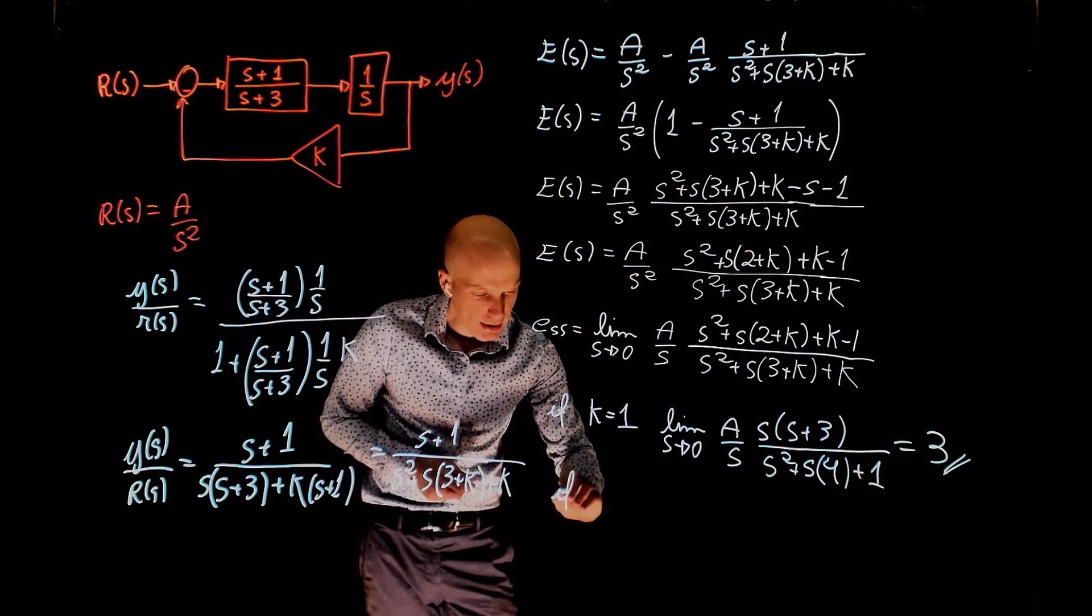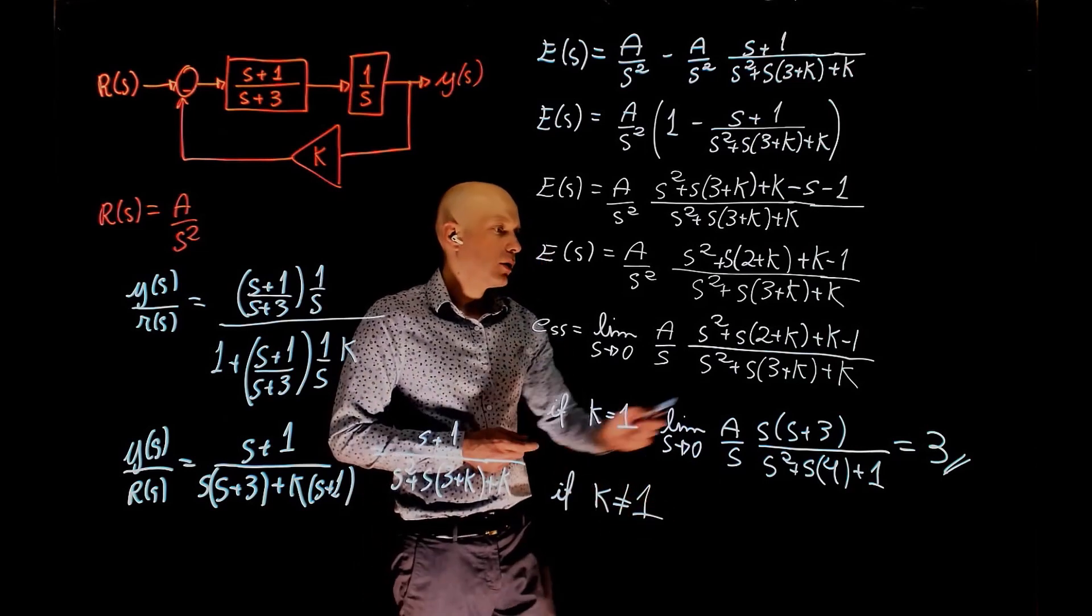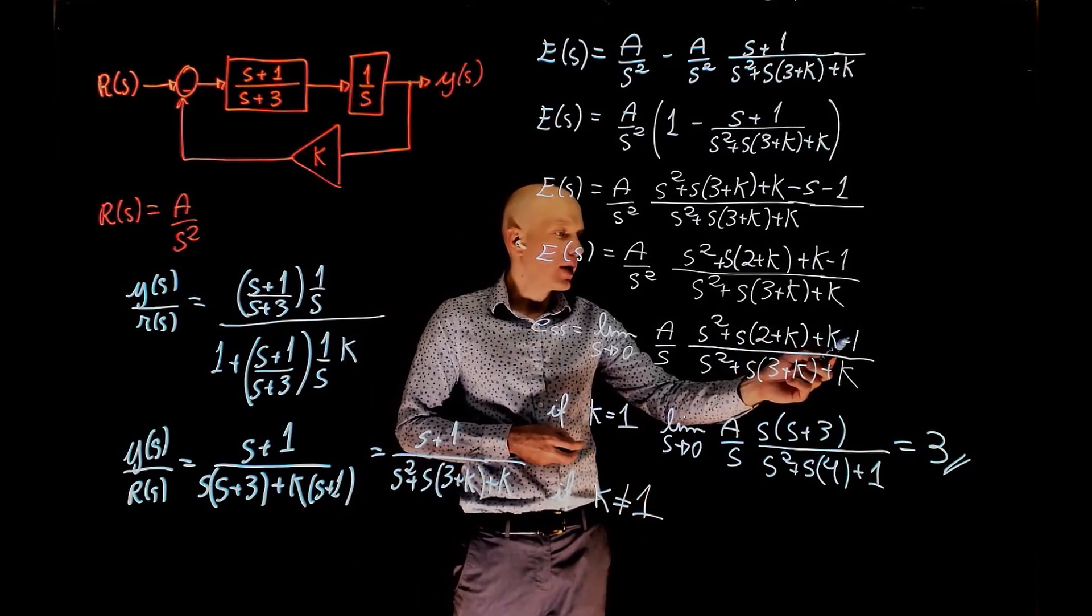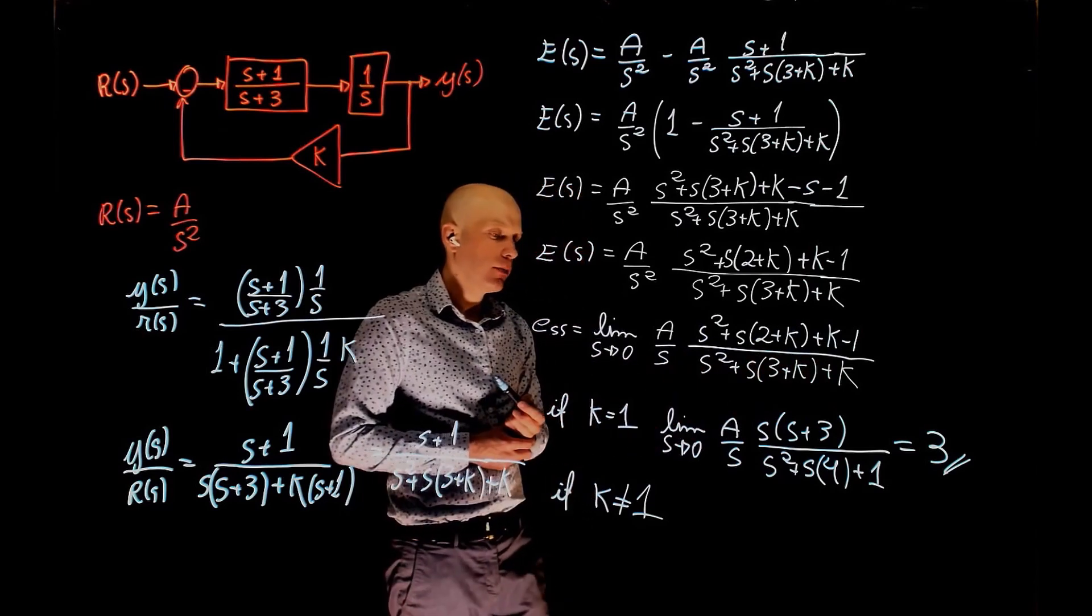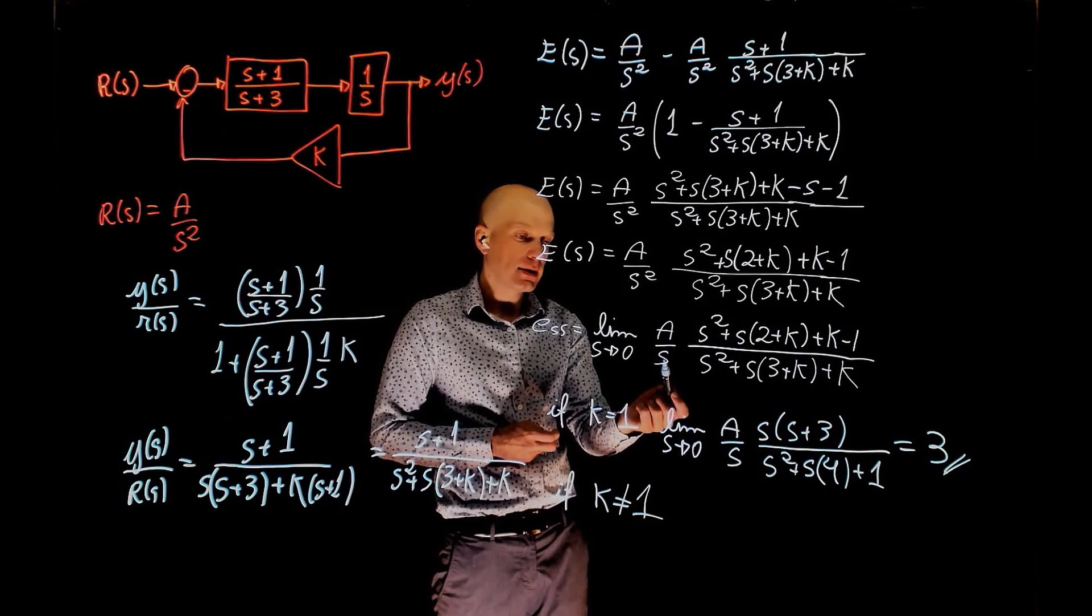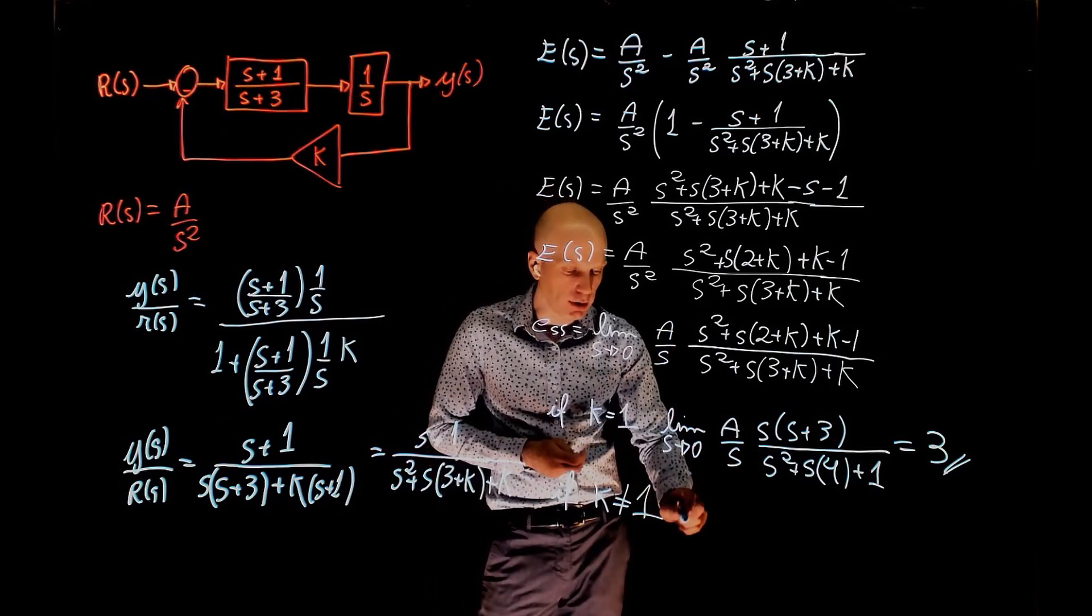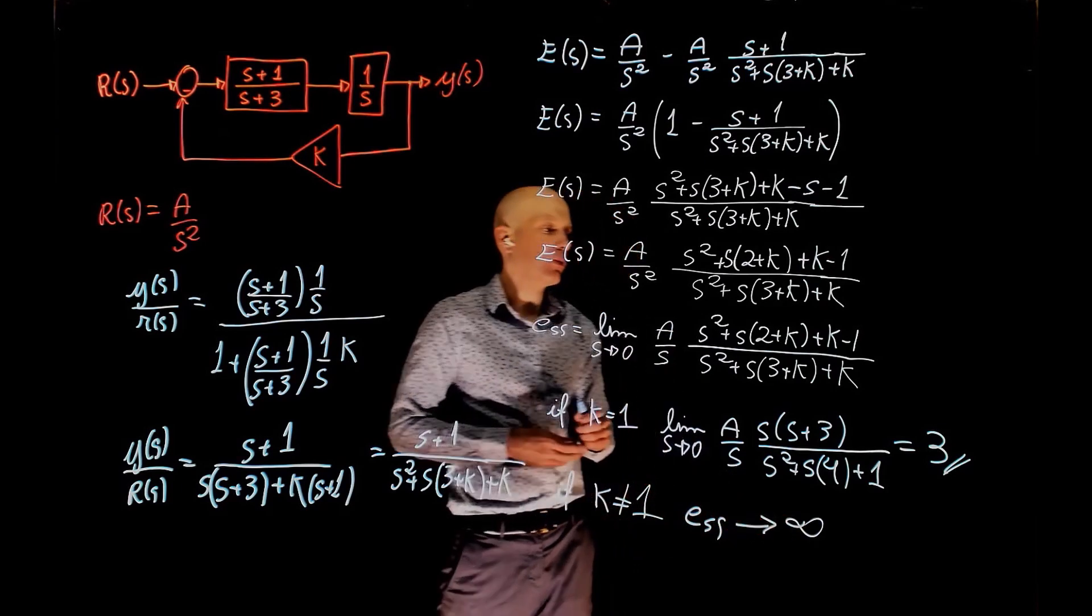Now, if k is different than 1, this term here cannot be cancelled, and you cannot factor this s with s's from the numerator here, which means that when s tends to 0, a over s tends to infinity, and the steady state error in that case tends to infinity.